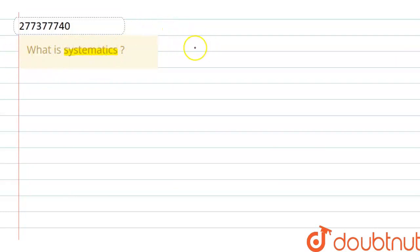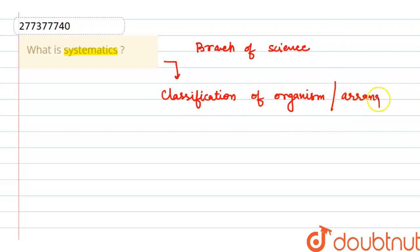Systematics is the branch of science that deals with the classification of organisms, or we can say it is the arrangement of organisms.